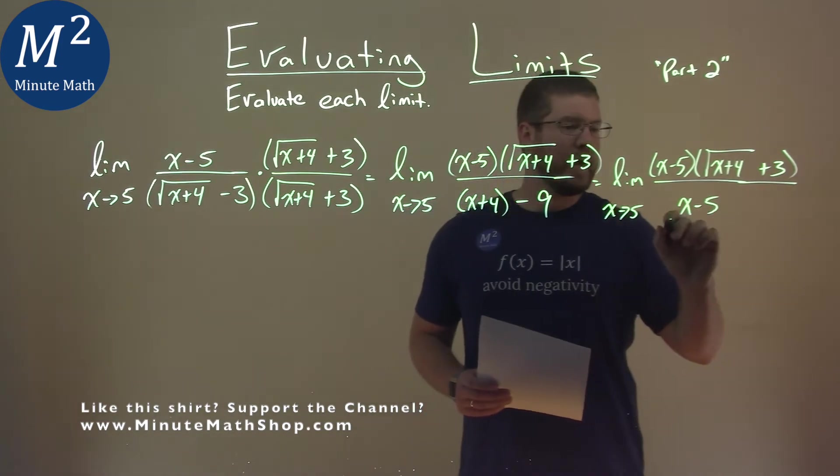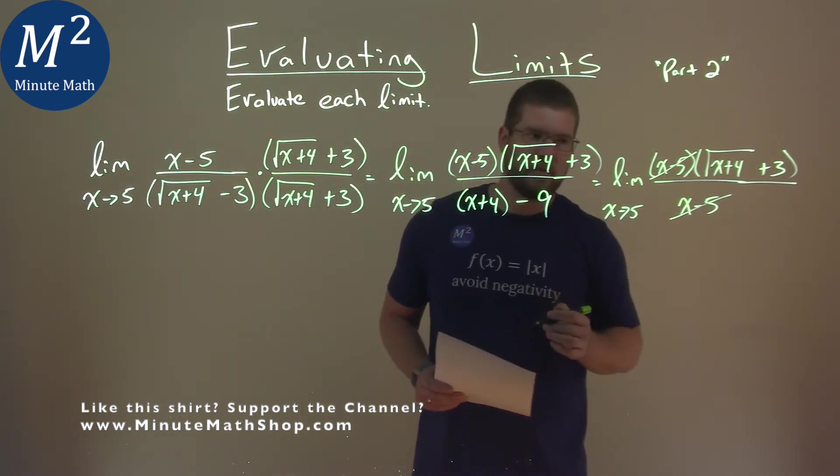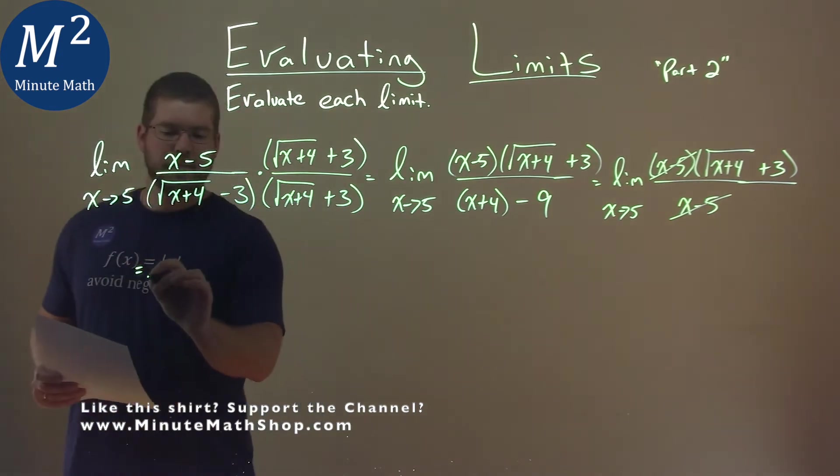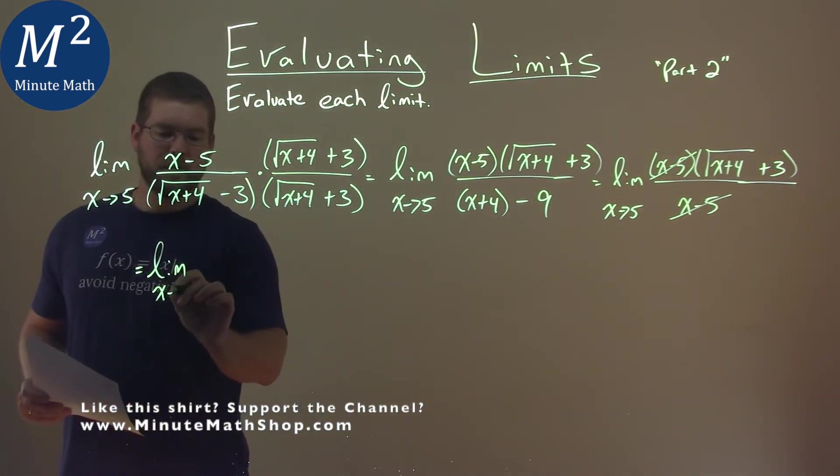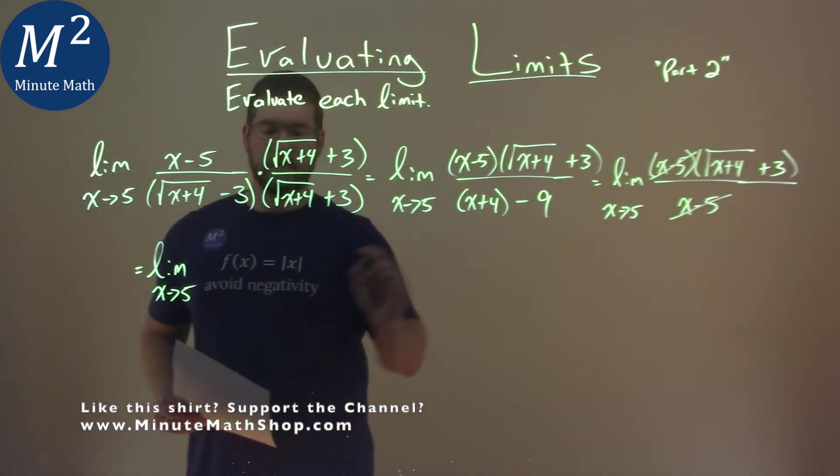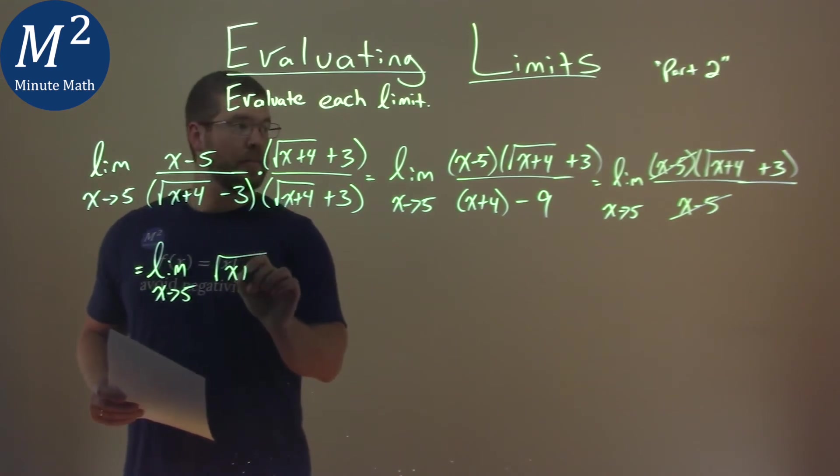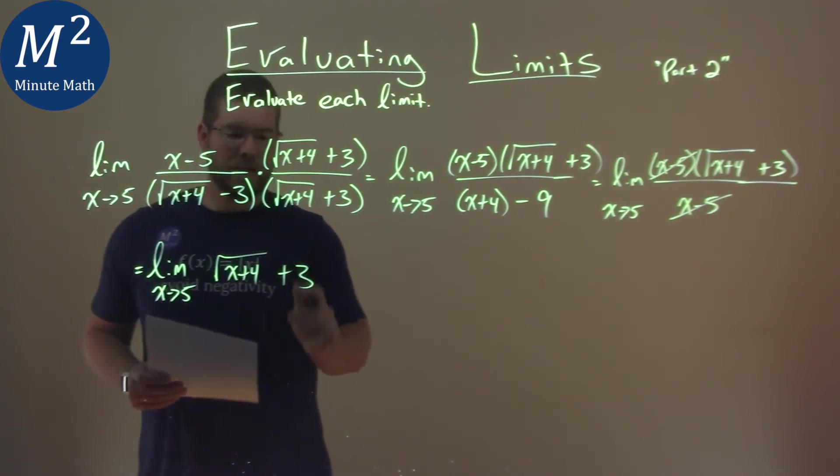Well, look, the x minus 5s cancel. That's what we're looking for. So let's rewrite this limit as x approaches 5 of the square root of x plus 4 plus 3. That's left over.